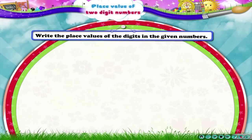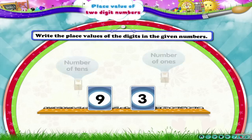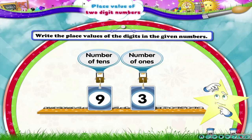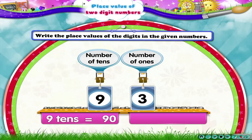Look at the next number, 93. Can you tell me the place value of 9? Yes, 9 shows the number of tens, so its place value is 90. The place value of 3 is 3 ones, that is 3.